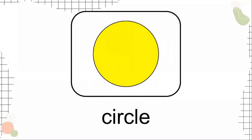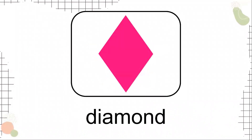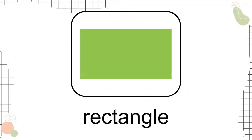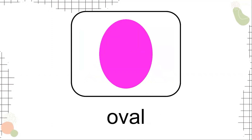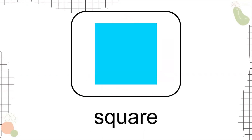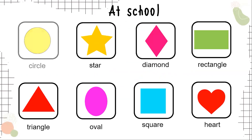Circle, circle. Star, star. Diamond, diamond. Rectangle, rectangle. Triangle, triangle. Oval, oval. Square, square. Heart, heart. Circle, star, diamond, rectangle, triangle, oval, square, heart.